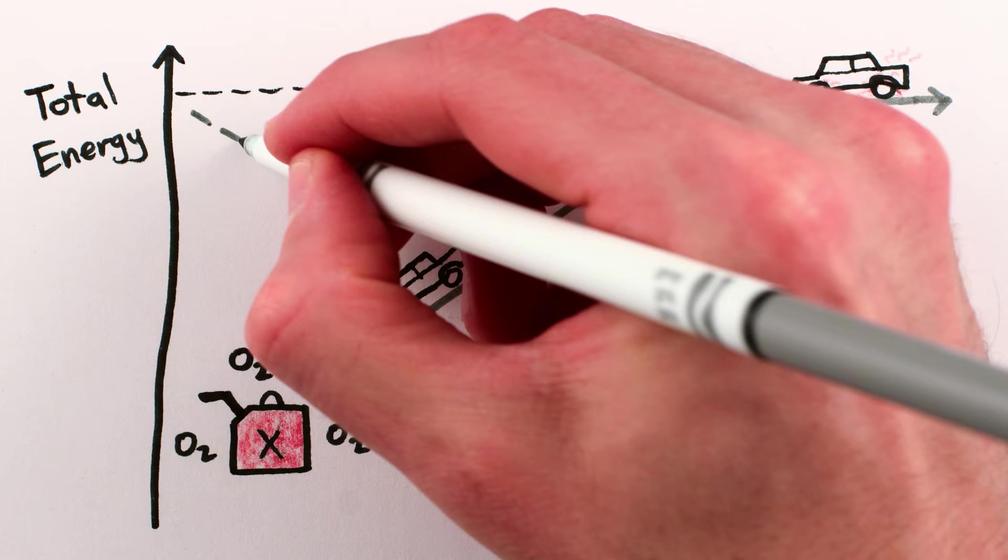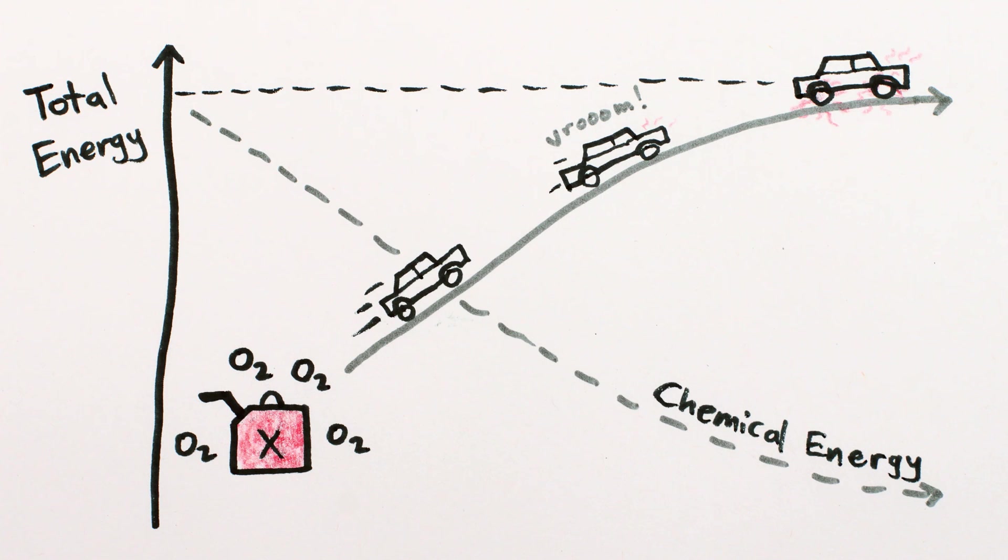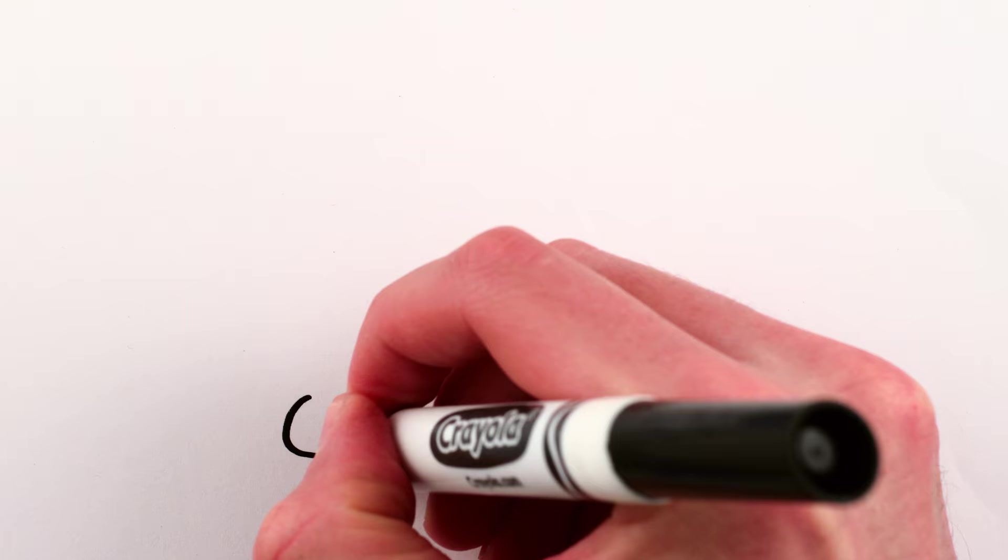The total energy of the world remains constant during the trip, but useful chemical energy is converted into useless high-entropy heat and noise. The energy is still there, but we can't reclaim it to power any more cars, as convenient as that would be.